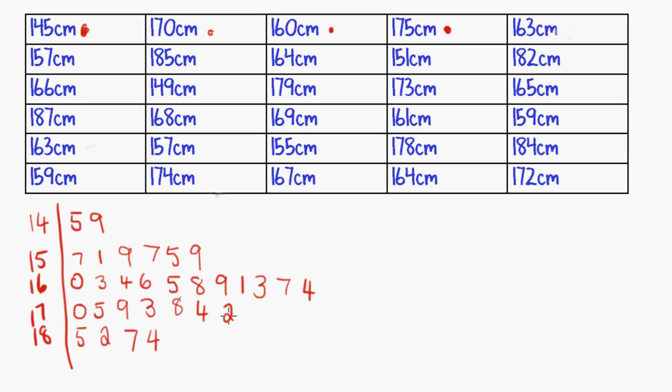Now what I've created here is an unordered stem plot. And what it means unordered is just that these leaf parts here, the leaves, they're not in order. Five, nine happens to be, but this sequence here, seven, one, nine, seven, five, nine, that's not in order.